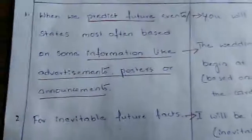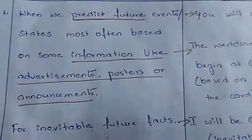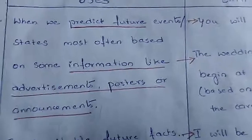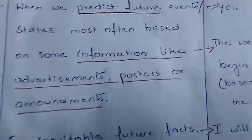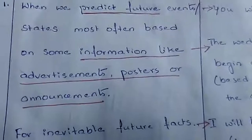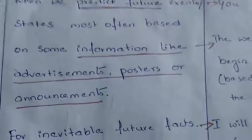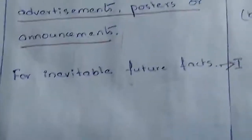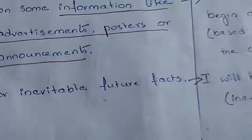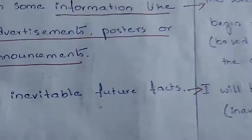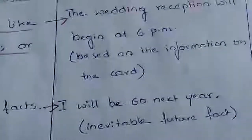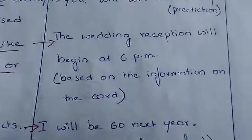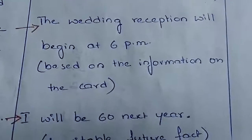In these two contexts, we use the simple future tense. One is to predict — when we predict future actions based on some information, we use the simple future tense to express such actions. Second, when we are referring to inevitable future facts, that means which we cannot stop, such actions we also express in simple future tense. This is all about simple future.